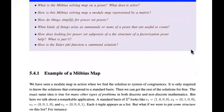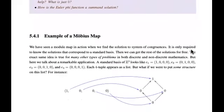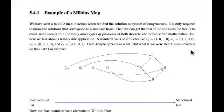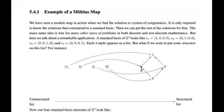Let's think for a minute about tuples. So, 1, 0, 0, 0. Usually when we have a tuple of numbers, we don't have it structured. But what if we want to throw a poset structure on this tuple?